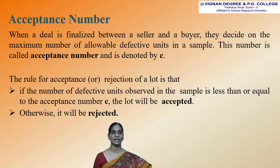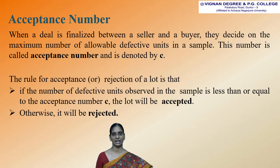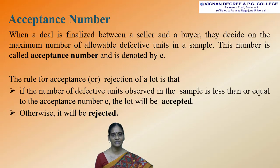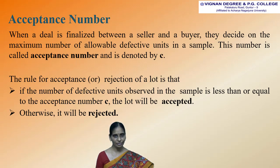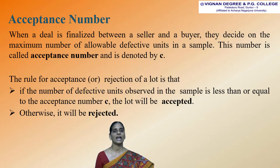The next term is acceptance number. When a deal is finalized between a seller and a buyer, they decide on the maximum number of allowable defective units in a sample. This number is called the acceptance number and is denoted by small letter c. The rule for acceptance or rejection of a lot is: if the number of defective units observed in the sample is less than or equal to the acceptance number c, then the lot will be accepted; otherwise, it will be rejected.